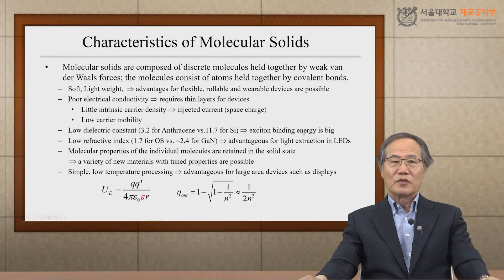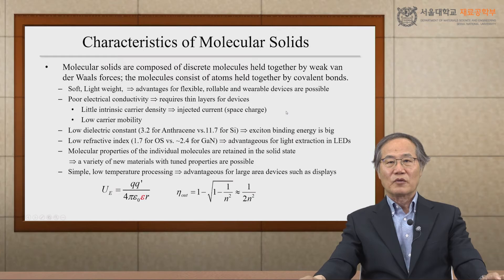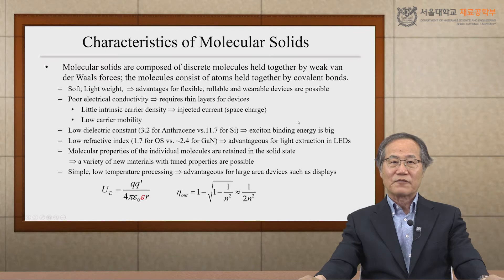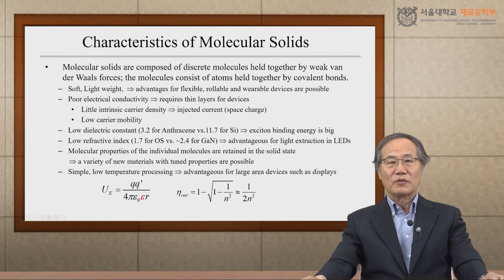These conjugated molecules form semiconducting molecular solids composed of discrete semiconducting molecules held together by van der Waals forces. In contrast, within molecules, atoms are held together by covalent bonds. Since covalent bonds are much stronger than van der Waals forces, the intermolecular bonding forces are rather weak. Therefore, the materials are soft and lightweight compared to inorganic semiconductors. This soft and lightweight nature gives organic semiconductors advantages for flexible and even wearable devices.